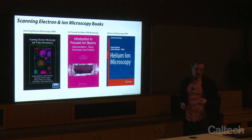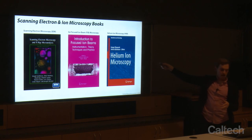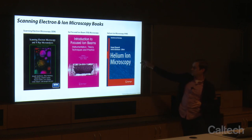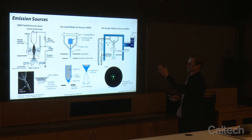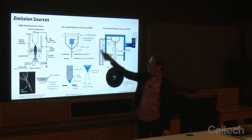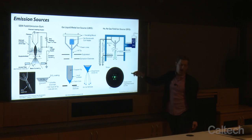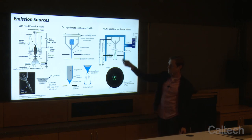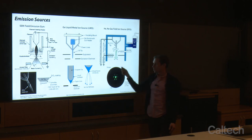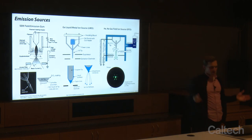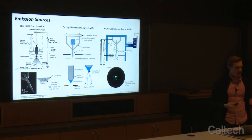Throughout these lectures, I like to draw analogies between different scanning beam systems. The relevant textbooks are here for SEM, gallium focused ion beam, and helium ion microscopy. We can draw analogies between the emission sources — a field emission gun and a liquid metal ion source for SEM and gallium FIB respectively. Today we'll talk about how the gas field ion source operates. Each one has a tungsten needle, an extraction voltage, and an accelerating potential. They're basically similar construction, with little intricacies important for understanding the physics of how we create these beams.